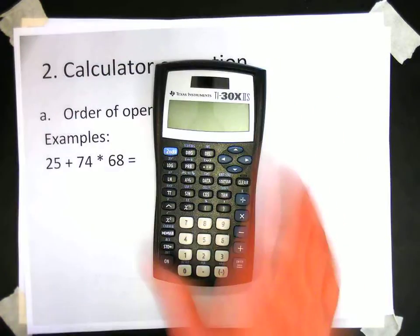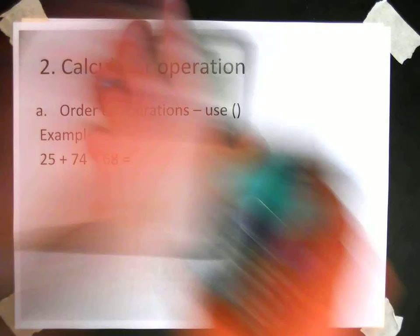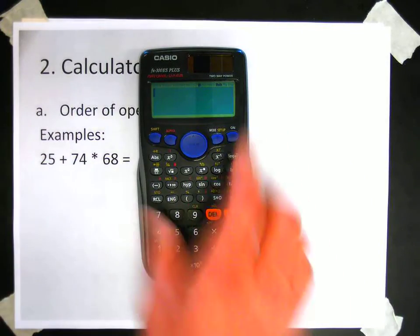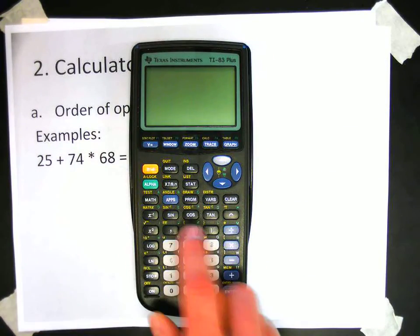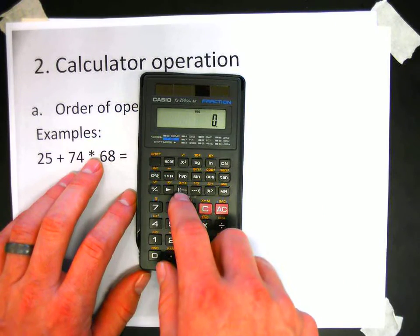So you want to find the parentheses key for your calculator. Here it is on this style of calculator. Here we have it on this Casio. And on the graphing calculator, we see it's right there. This style of Casio, the parentheses keys are right here.